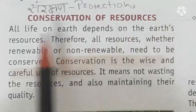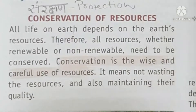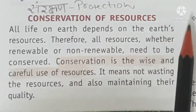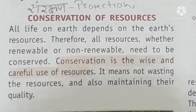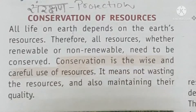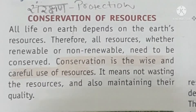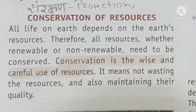Earth's resources are very necessary for life to continue on earth. Resources can be either renewable or non-renewable. Renewable resources include the sun, which is never going to be finished. In non-renewable resources, we have seen groundwater — before it was renewable, but now the situation has shifted into the non-renewable category, because the groundwater level is very low.